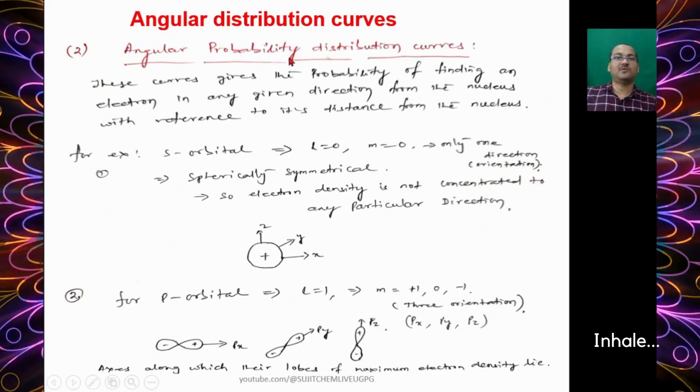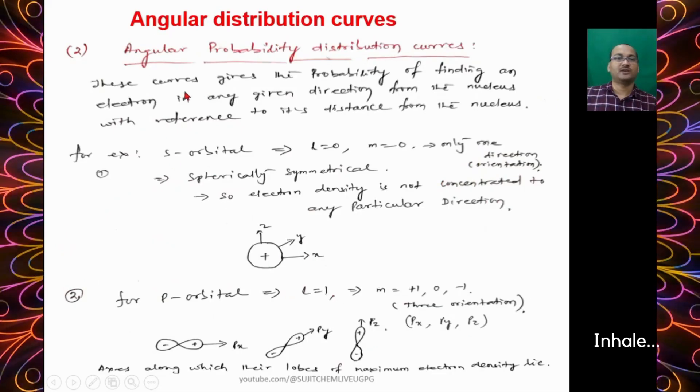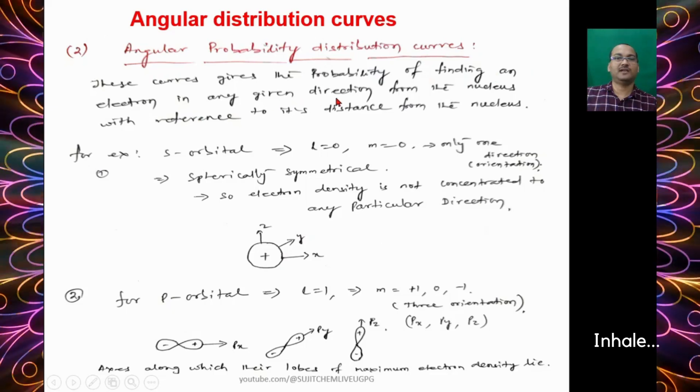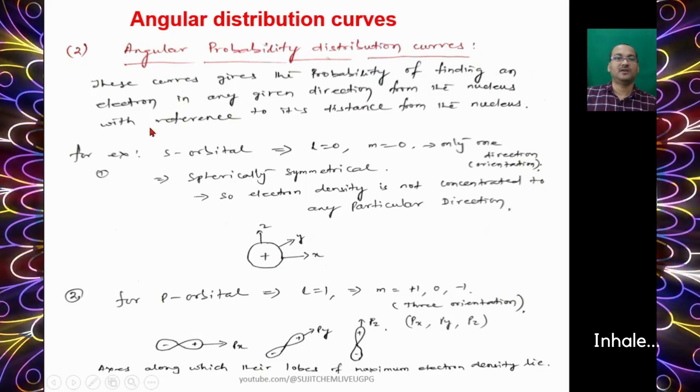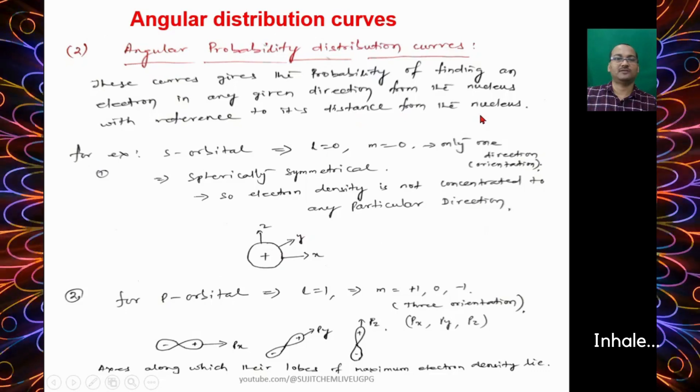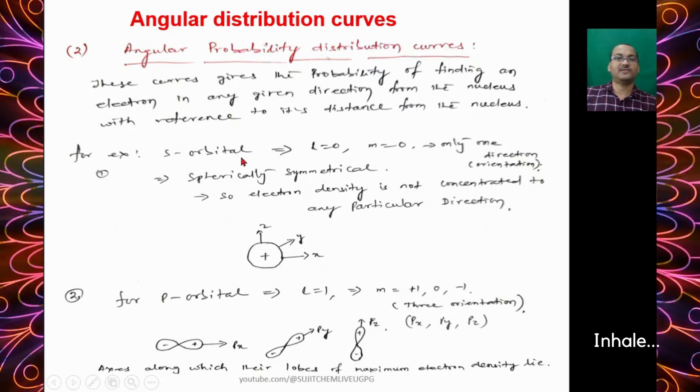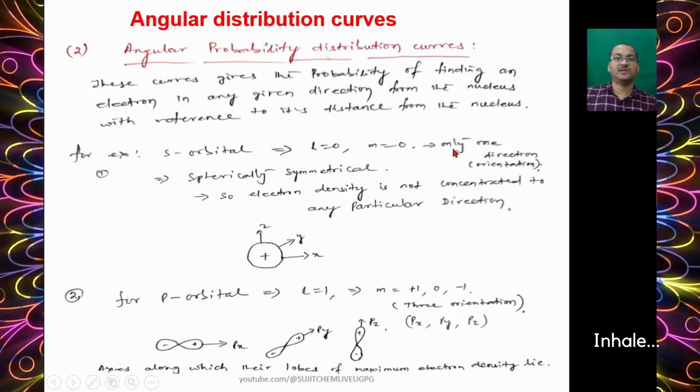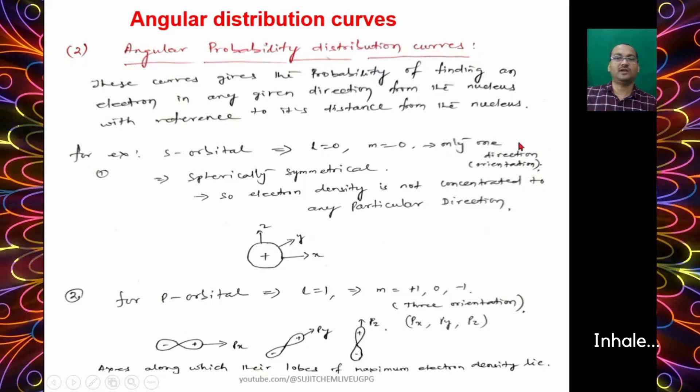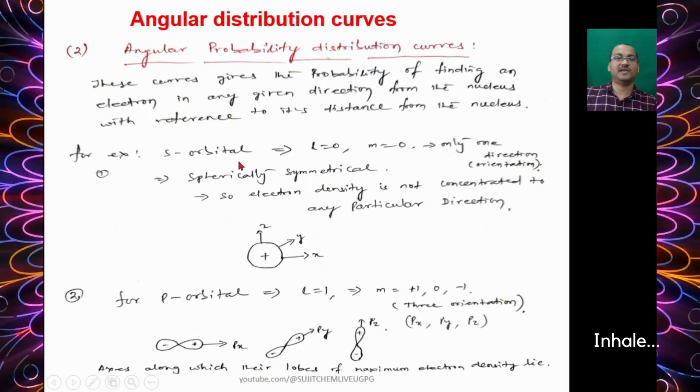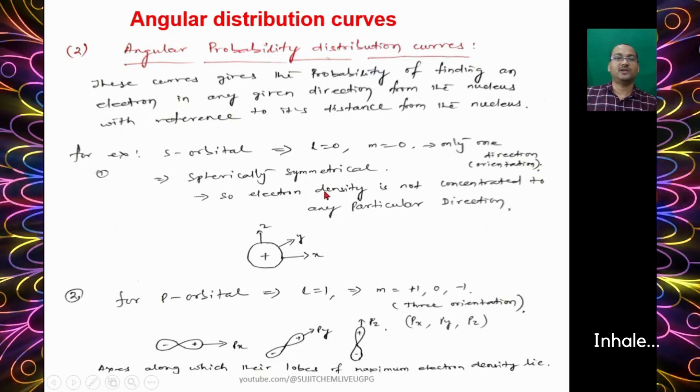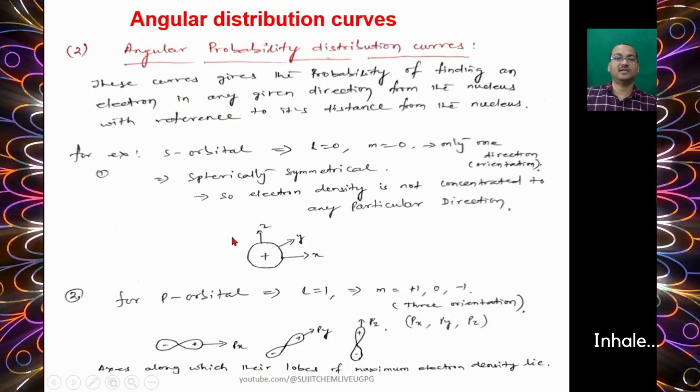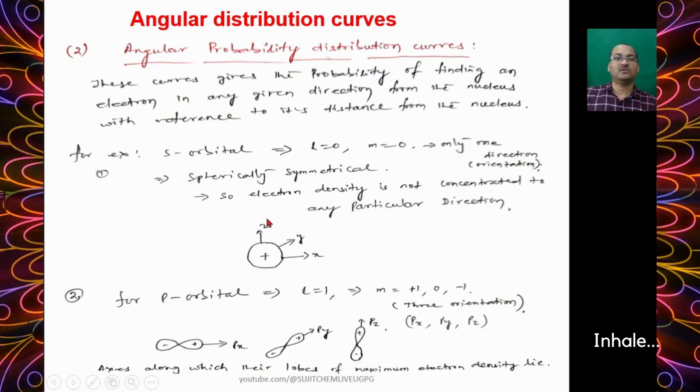Let's talk about angular probability distribution curves. These curves give the probability of finding an electron in any given direction from the nucleus with reference to its distance from the nucleus. For example, for s orbital we know l = 0 and m = 0, meaning only one direction or one orientation, so that has to be spherically symmetrical. The electron density is not concentrated to any particular direction, so it is uniformly distributed to all directions.